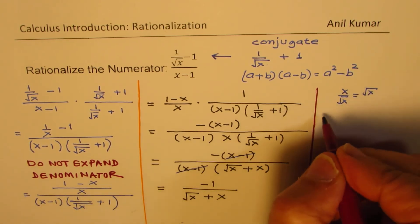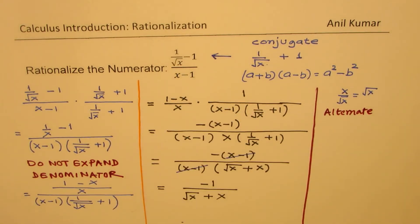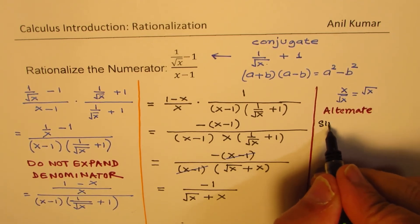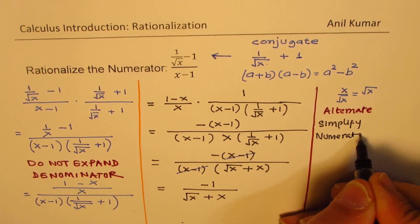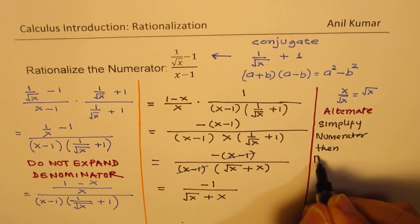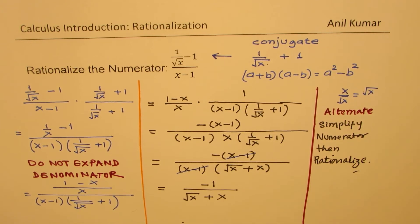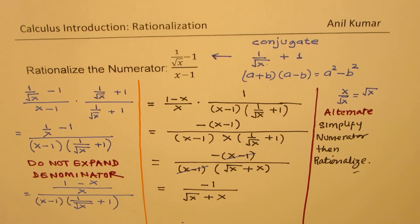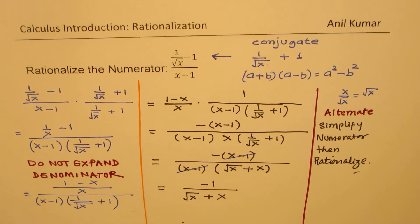Now, here is an alternate suggestion. The alternate suggestion is, simplify numerator first. Alternate is, simplify numerator, then rationalize. I'll take up the alternate method. We'll save two steps in this method, and hopefully it becomes simpler, as this part here was kind of tricky. Have a look at the alternate method now.